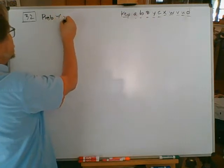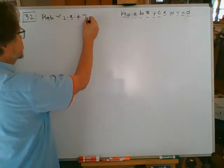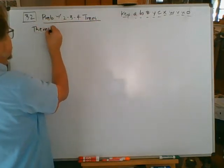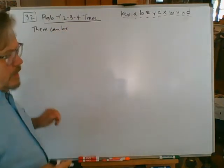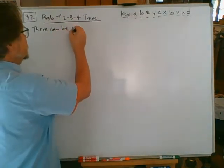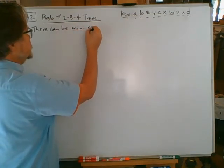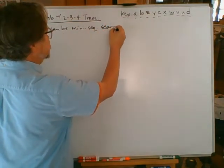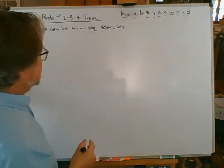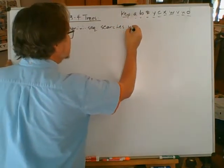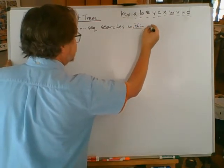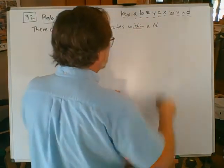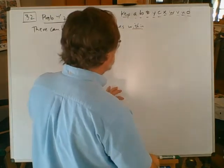Problem with 2-3-4 trees: there will be, if we've got a lot of data values, there can be what I'm going to call many - M-I-N-I - sequential searches. There can be many sequential searches within nodes.